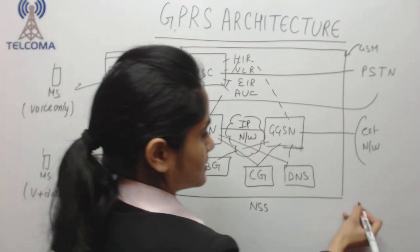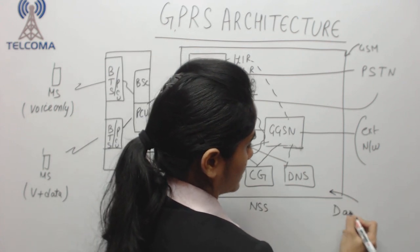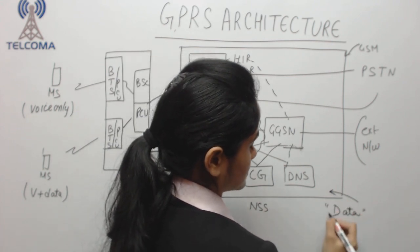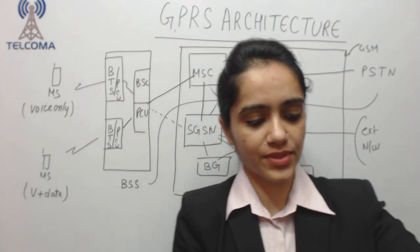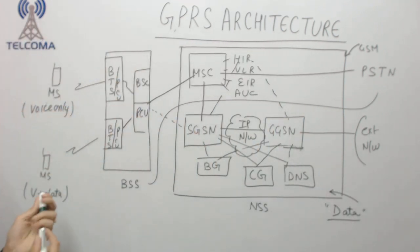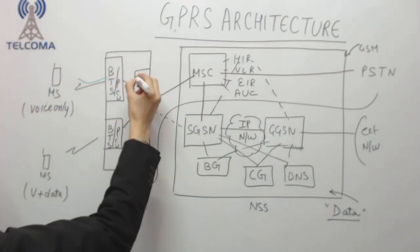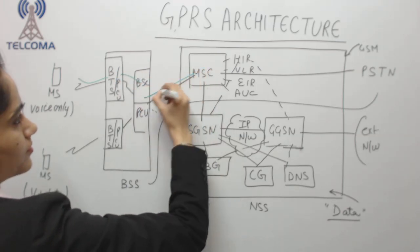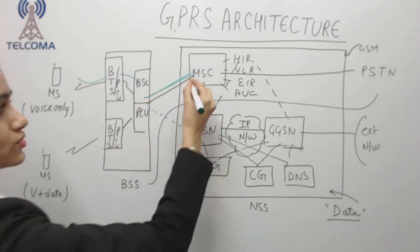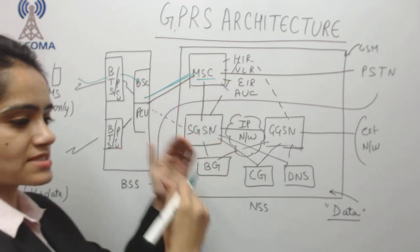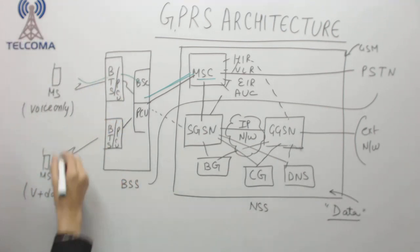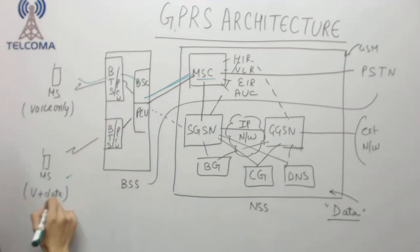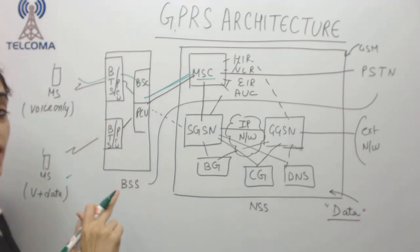These added units are required for GPRS and will process our data. If the mobile station wants voice only, the path is the same as in GSM — it goes through the BTS and forwards to the MSC, which handles the digital processing and connects the call.